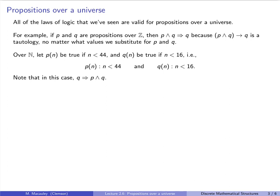Let's check that two different ways. If Q is true, that means n < 16, so n must also be less than 44 — so both P and Q hold. Let's also check it with a truth table. Writing out P, Q, P∧Q, and P→Q, we get P∧Q as 0,0,0,1 and P→Q as 1,1,0,1.